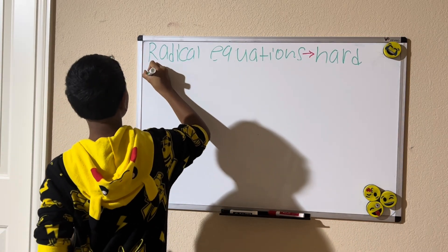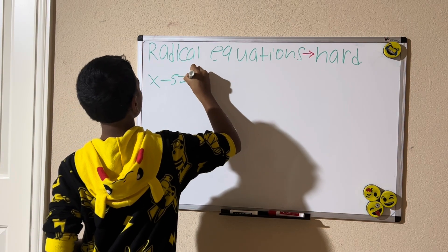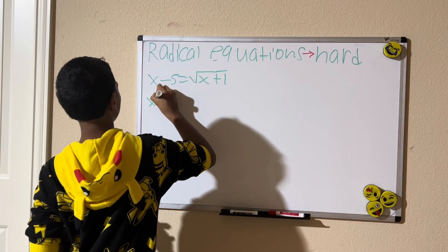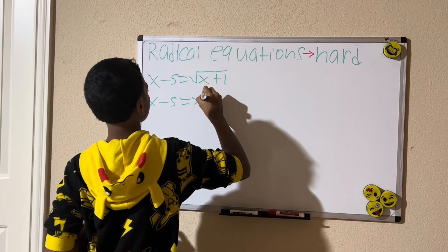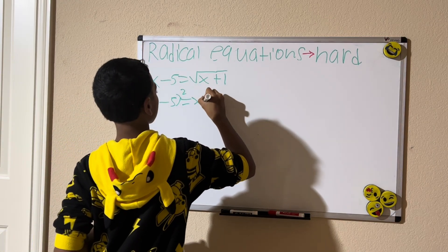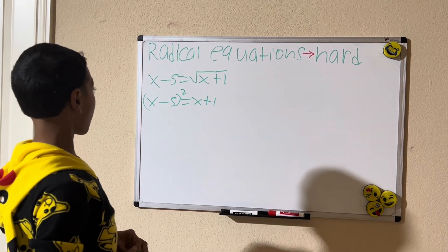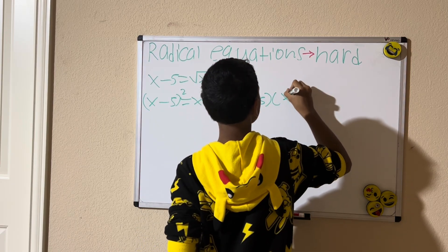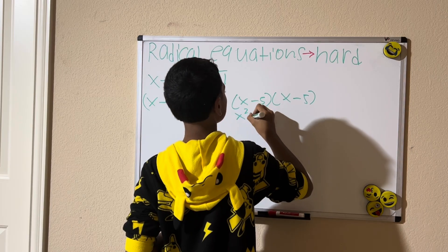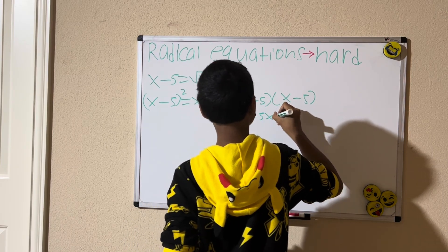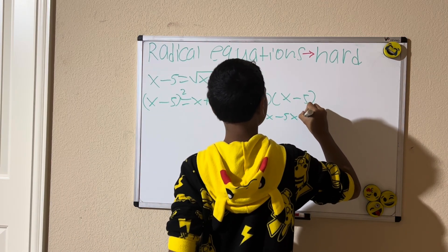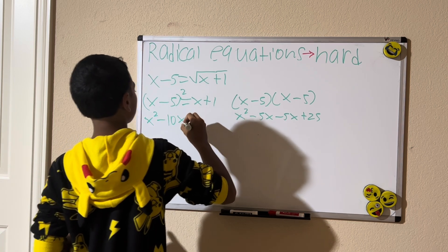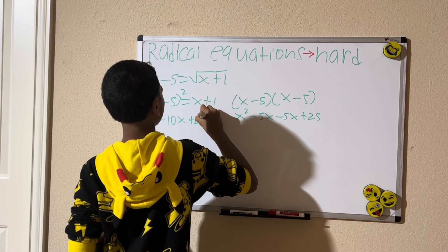For the next problem, we have x minus 5 equals the square root of x plus 1. We're going to square both sides. Squaring the left side gives us x minus 5 squared, and the right side gives us x plus 1.